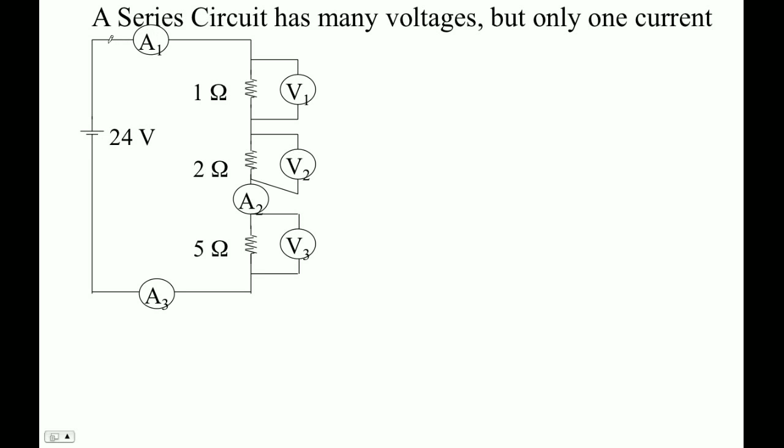That's an ammeter, so that's like a flow meter. The current is going to flow through that ammeter. That's a resistor, a 1 ohm resistor, a 2 ohm resistor, a 5 ohm resistor. Notice that the current flows through three different ammeters, A1, A2, and A3.